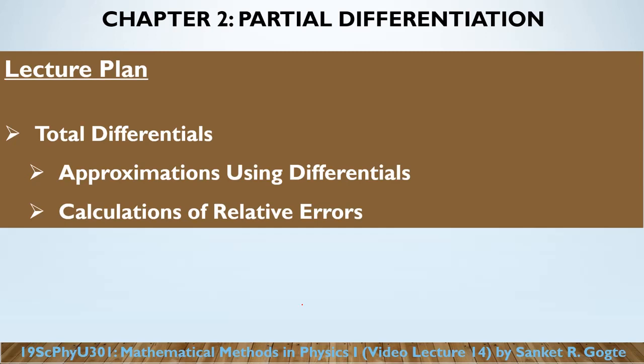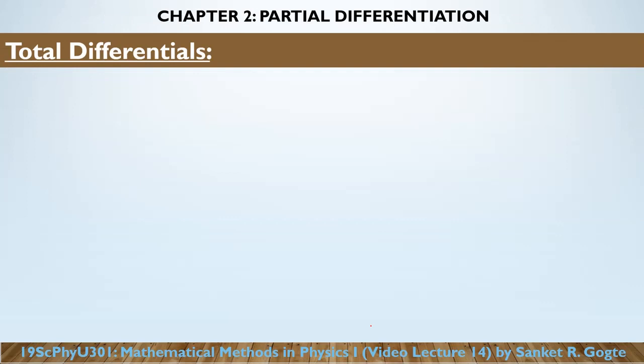In this lecture we want to discuss the concept of total differential and we will apply that concept to two examples. The first one is finding the approximate value of given calculations, and the second application will be to find out the relative error. The application of relative error is important from a physics point of view because it is part of the error analysis that one has to make when performing a physics experiment. Let's get started with the total differential.